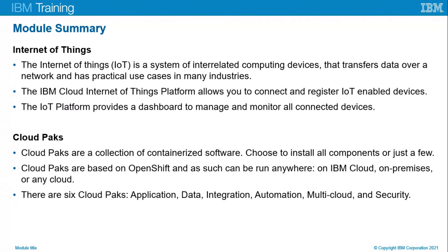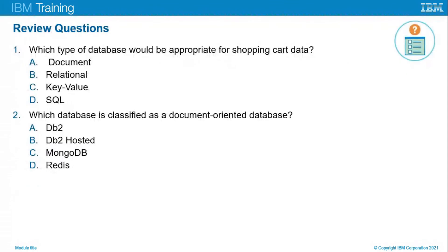Review questions. Question one: which type of database is appropriate for shopping cart data? The answer is C — key-value databases are commonly used for leaderboards, caches, and shopping cart data. Question two: which database is classified as document-oriented? The answer is C — MongoDB is considered a document-oriented database.